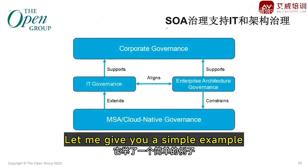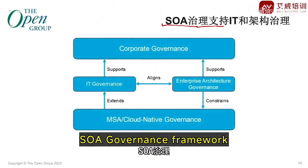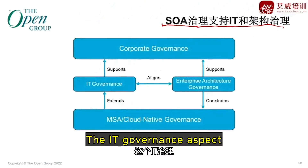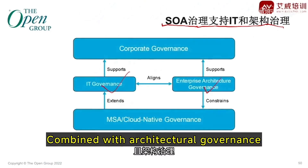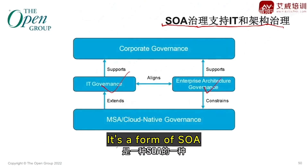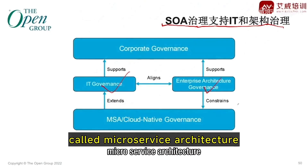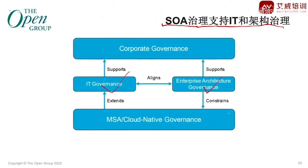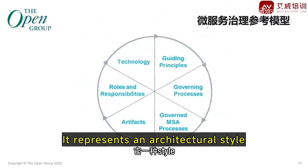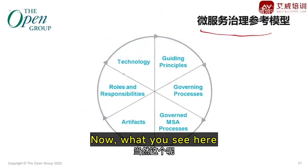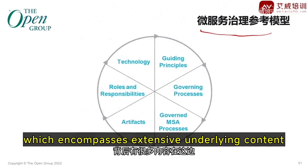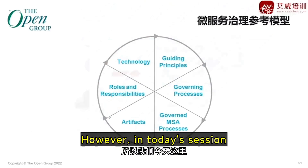Let me give you a simple example. The SFA governance framework supports both IT and architectural governance. Microservices represent a TOGAF pathway — specifically a variant called microservice architecture, or simply microservices. It represents an architectural style with its own governance reference model. What you see here is just a framework diagram which encompasses extensive underlying content. However, in today's session, we won't delve into these details.